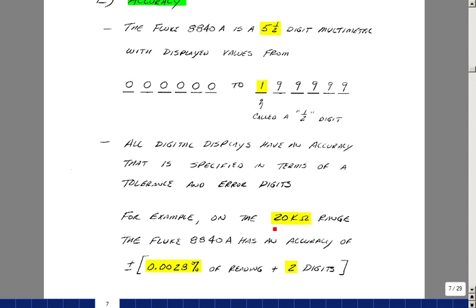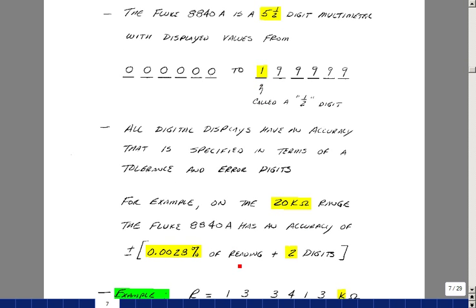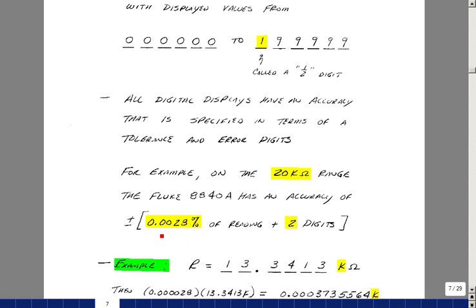On the 20k ohm range, the manufacturer lists the accuracy of the instrument as 0.0028% of the reading, plus two digits that we call two counts. So what does all that mean?